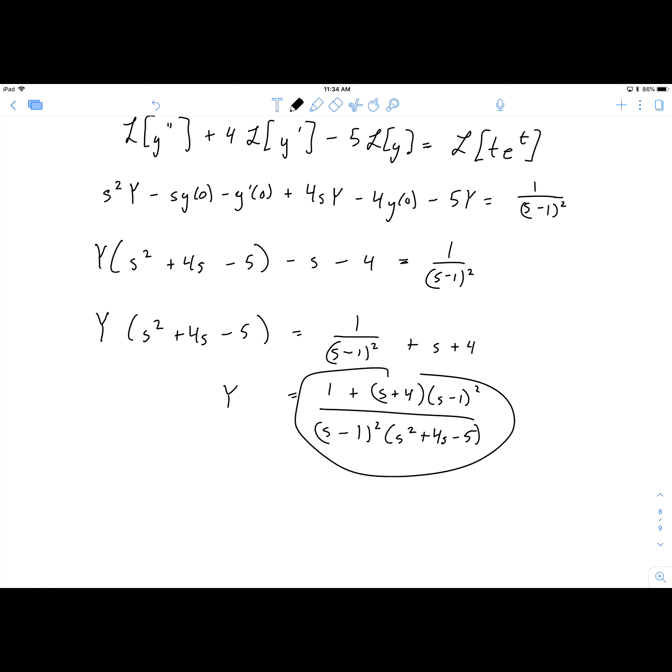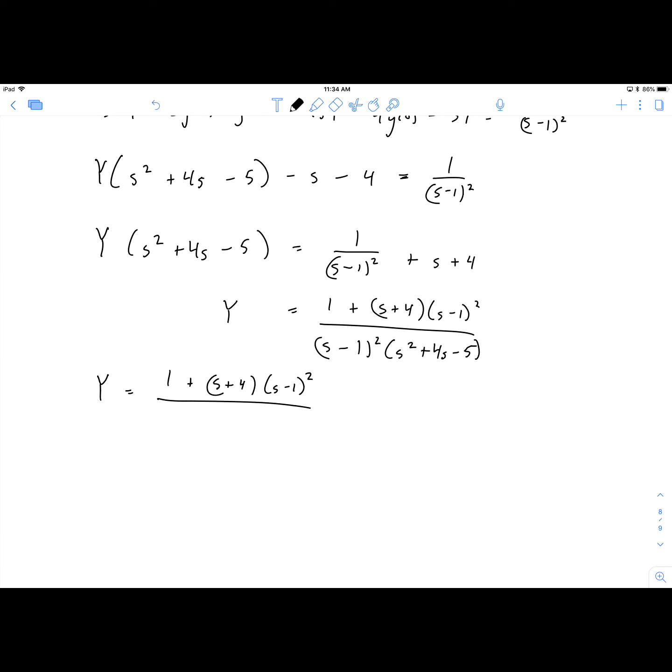So we have this relatively complicated looking piece that we need to break down and simplify. So to do that, first I'm going to factor the denominator more. So if you factor s² + 4s - 5, what you should get is (s+5) and (s-1). So that (s-1) will combine with the two that we already have. So we'll have (s-1)³ times (s+5).